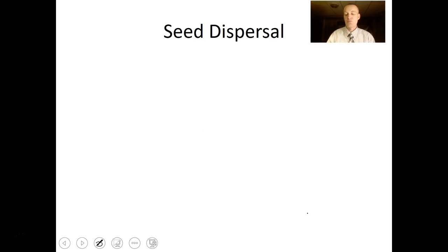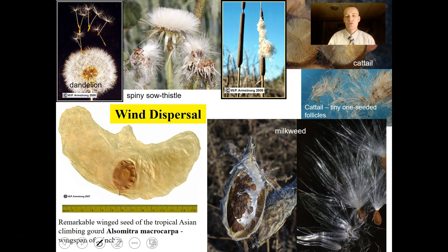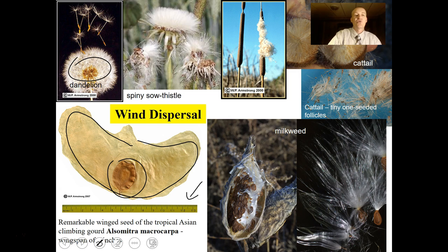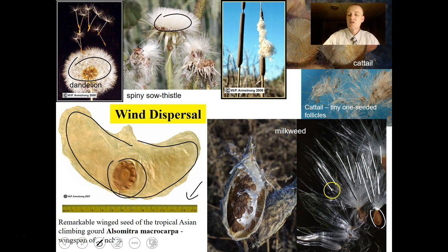Plants don't have legs so they use different means of dispersal. Wind dispersal includes seeds with wings, or feathery light wisps. You're probably familiar with dandelions blowing around, or thistle. The milkweed seed has very light feathery wisps that let it fly through the wind.